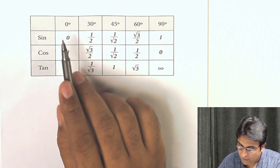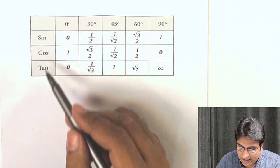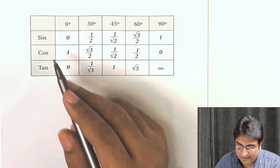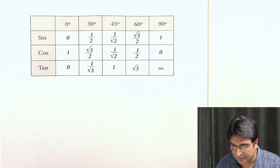So now you've got 0, 30, 45, 60, 90, and sine, cos, and tan. In many books you'll also find cosecant, secant, and cot, but these three are sufficient because those are just reciprocals of these ratios.